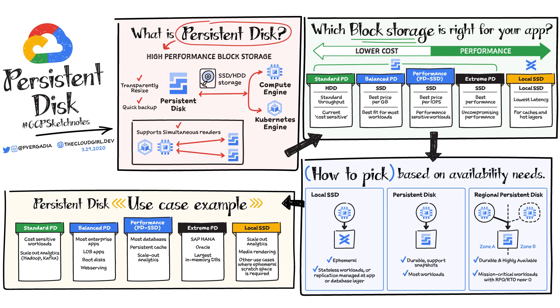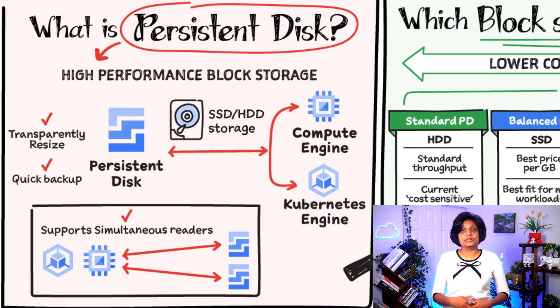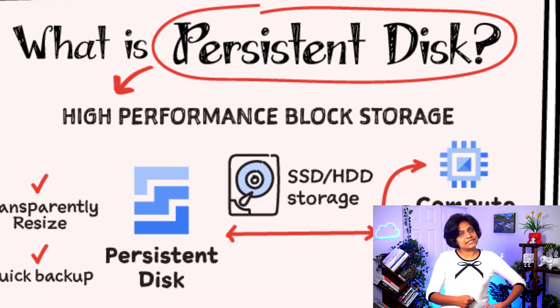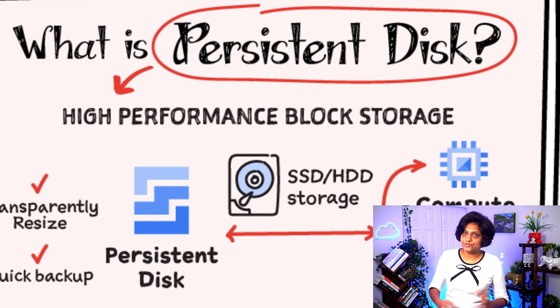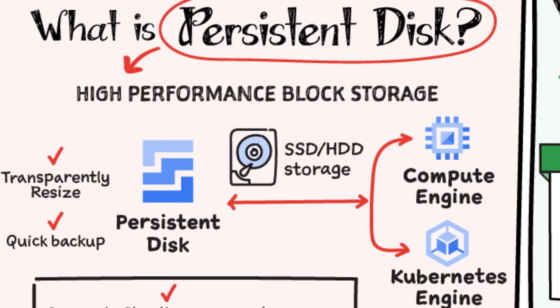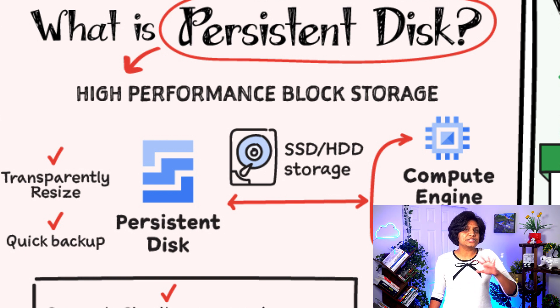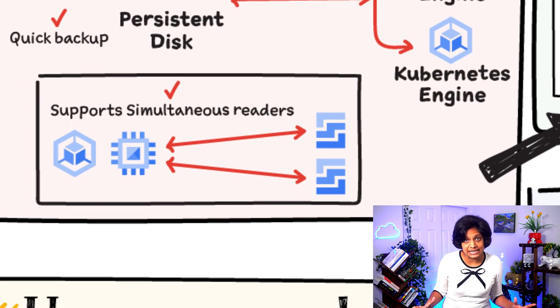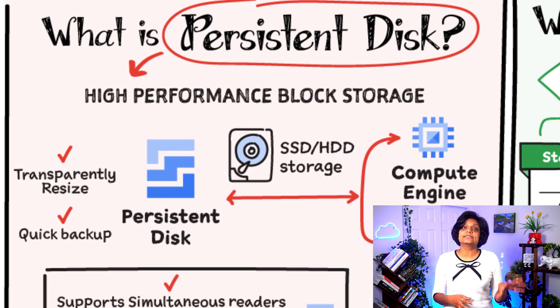In this video, let's look at a very commonly used product — Persistent Disk — different options, and how to pick the right option for your use case. Persistent Disk is a high-performance block storage, which is typically solid-state drive or hard disk drive disks that store data in blocks and is attached to compute. In Google Cloud, it means they're attached to Compute Engine or Kubernetes Engine. You can attach multiple Persistent Disks to Compute or Kubernetes Engine simultaneously, configure quick automatic incremental backups, and resize the storage on the fly without disrupting the application.